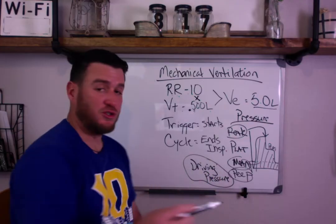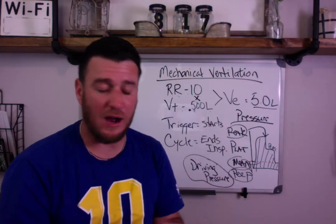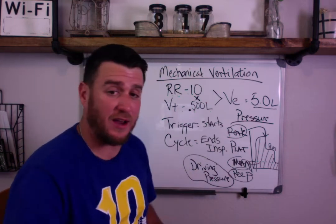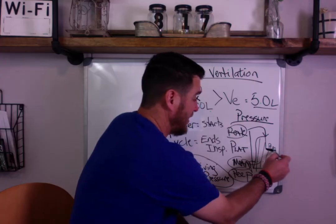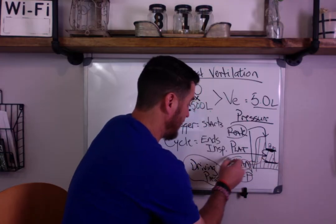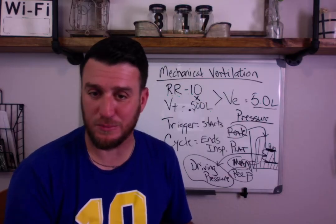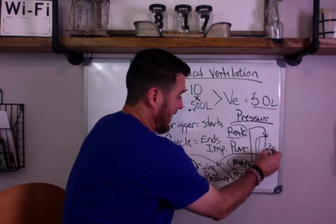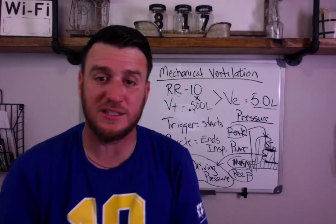Driving pressure is becoming an area of focus and study in researching ARDS, improving outcomes, and reducing mortality. Driving pressure is calculated by taking your plateau pressure and subtracting your PEEP — so the difference between plateau and PEEP is your driving pressure, and you want that to be minimal. High pressures are bad. If you have a high peak and a lower plateau, that difference tells you that you have an increase in airway resistance.